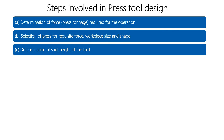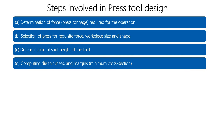The third step is determination of shut height of a tool, which plays one of the most significant roles in press tool design. Here we determine how much shut height the press tool we are going to design should have. Two things must be considered: first, the availability of the press machine and how much shut height it allows; second, the component requirements, such as how much bending or deep drawing has to be done.